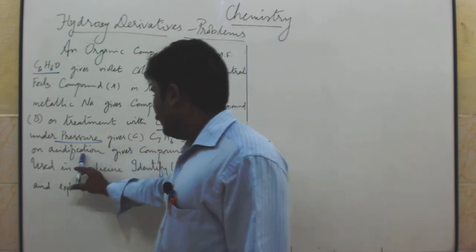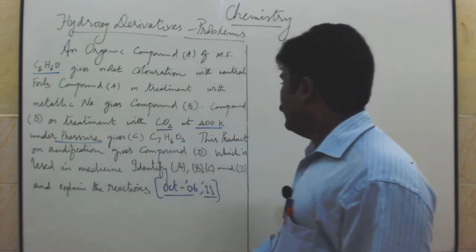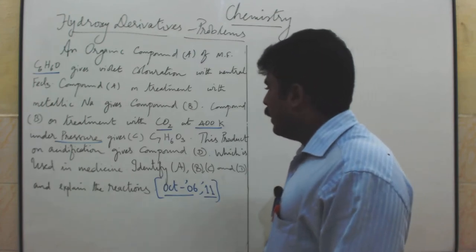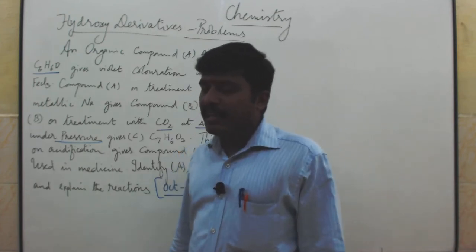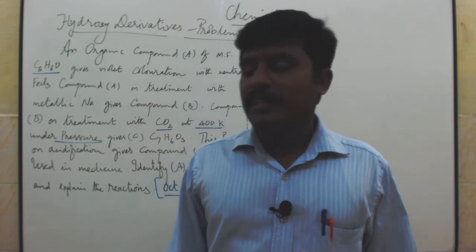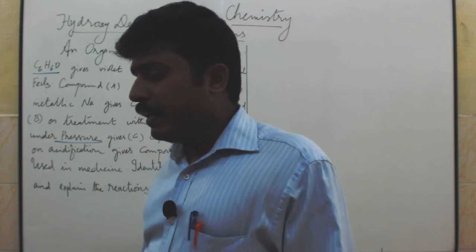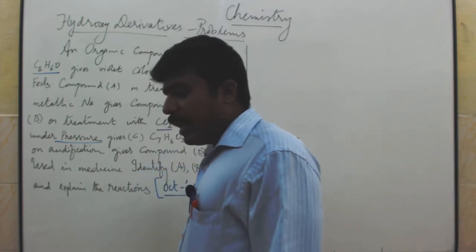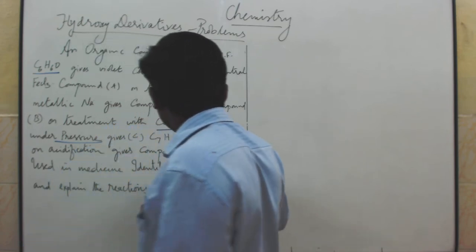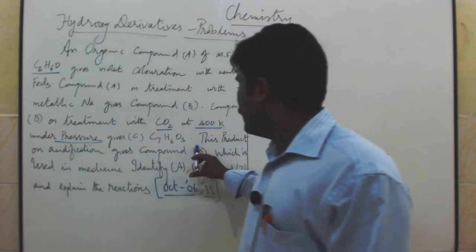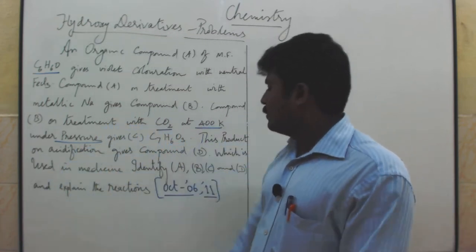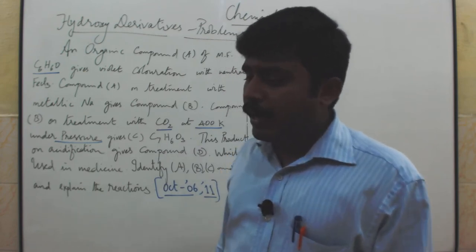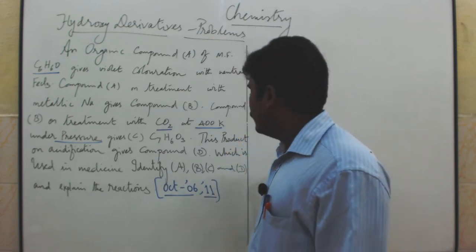This product on acidification gives compound D, which is used in medicine. Salicylic acid reacts with acetic anhydride to give acetyl salicylic acid, also known as aspirin — nothing but methyl salicylate. So compound D is aspirin.